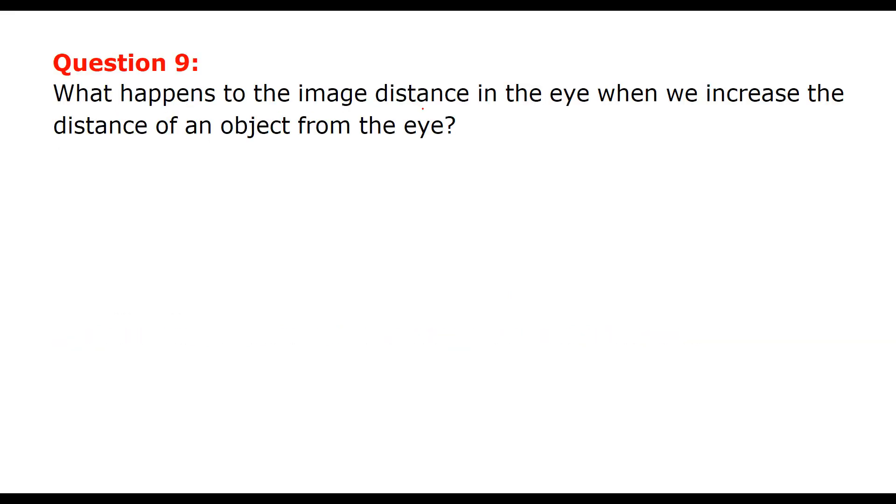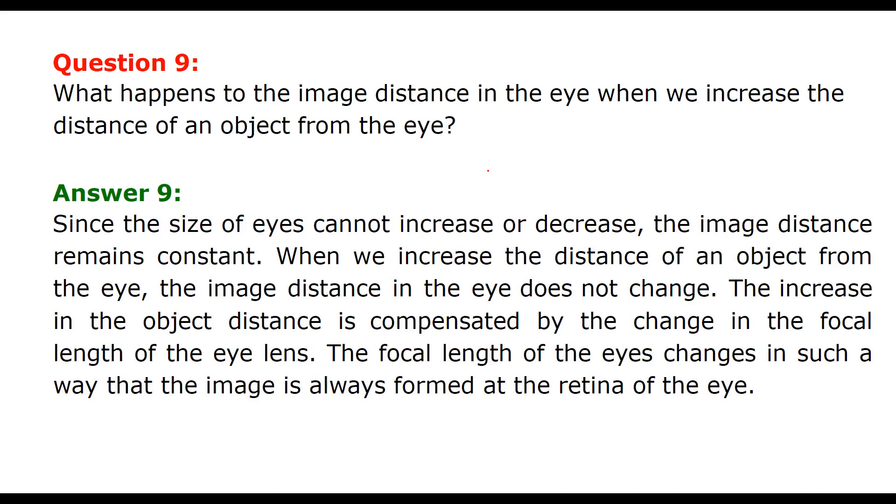What happens to the image distance in the eye when we increase the distance of an object from the eye? The size of the eye is limited - it cannot decrease or increase and the image distance remains constant. When we increase the distance of an object from the eye, the image distance does not change. The increase in object distance is compensated by change in the focal length of the eye lens, so image is always formed at the retina.